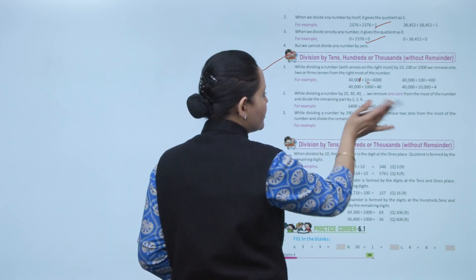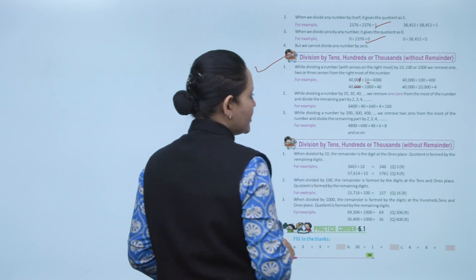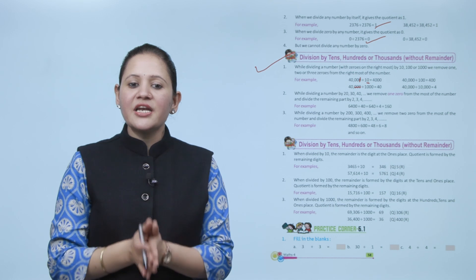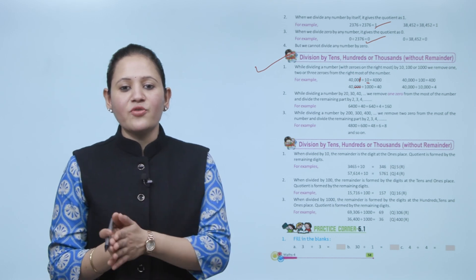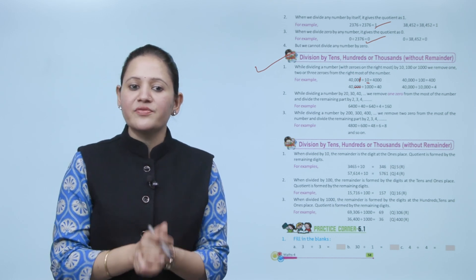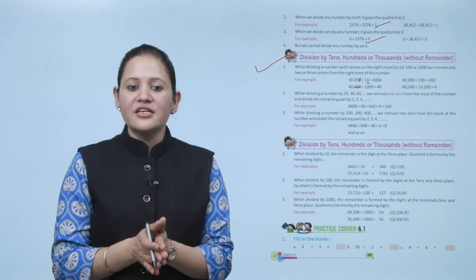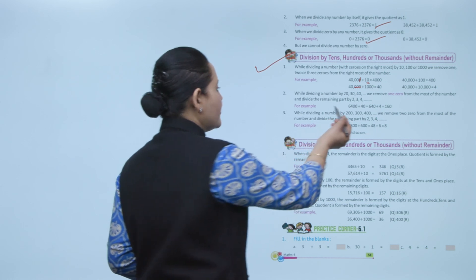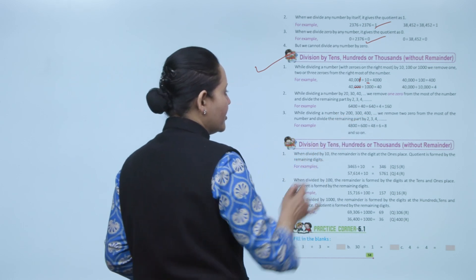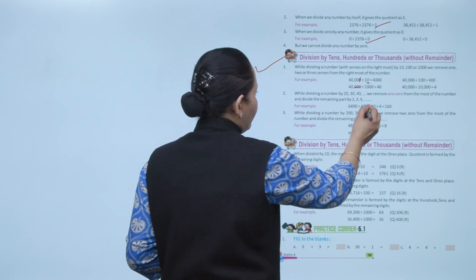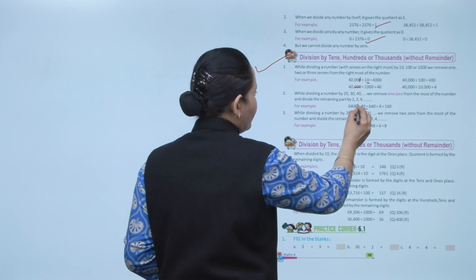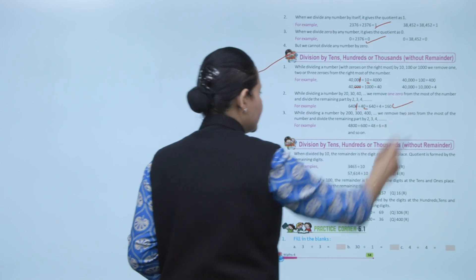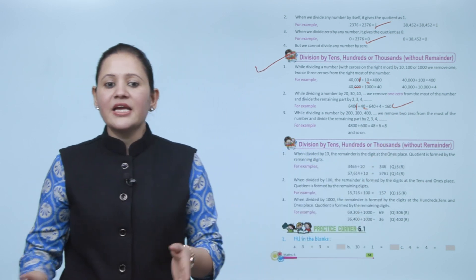While dividing a number by 20, 30, 40, and so on, we remove one zero from the rightmost of the number and divide the remaining part by 2, 3, 4, and so on. For example, 6400 divided by 40: since there is one zero, we remove one zero to get 640, then 640 divided by 4 gives you 160.